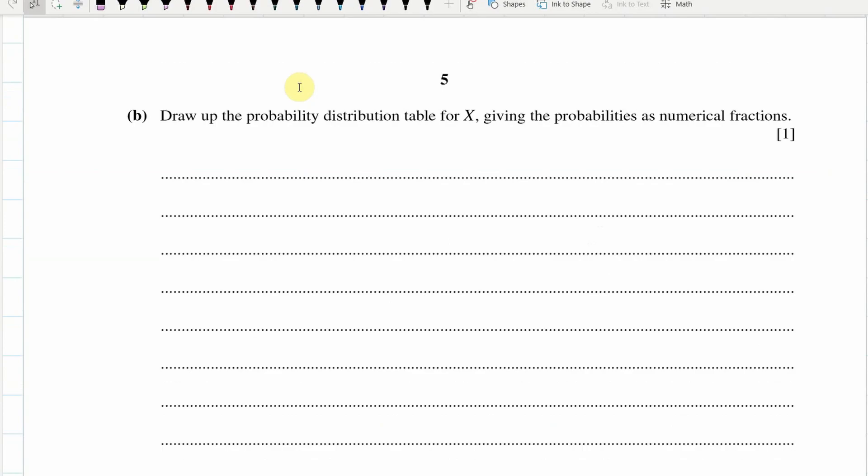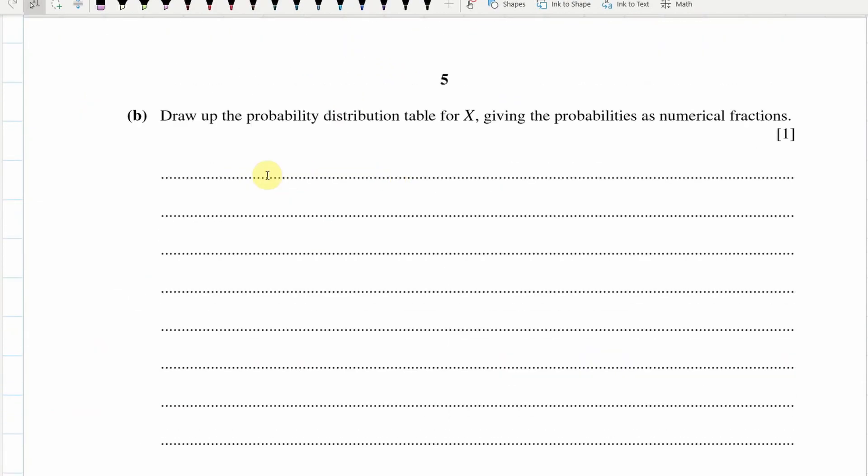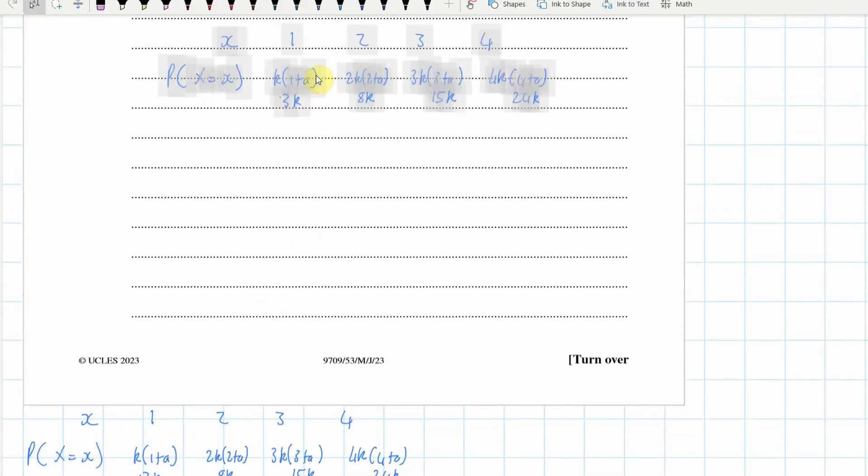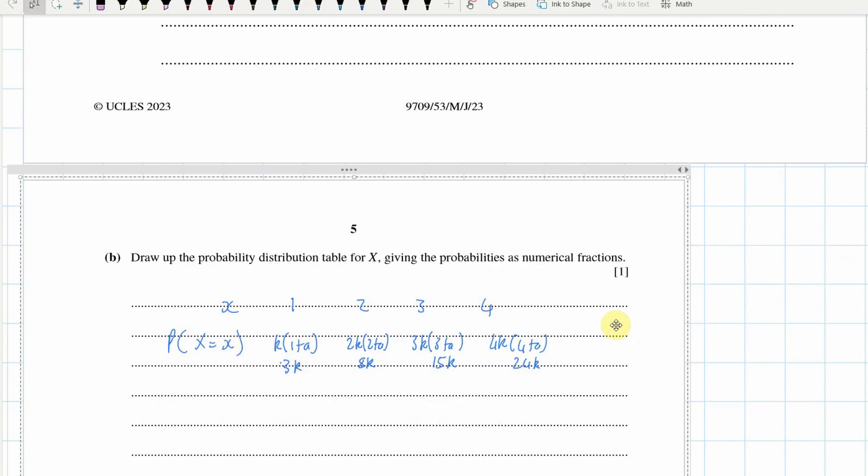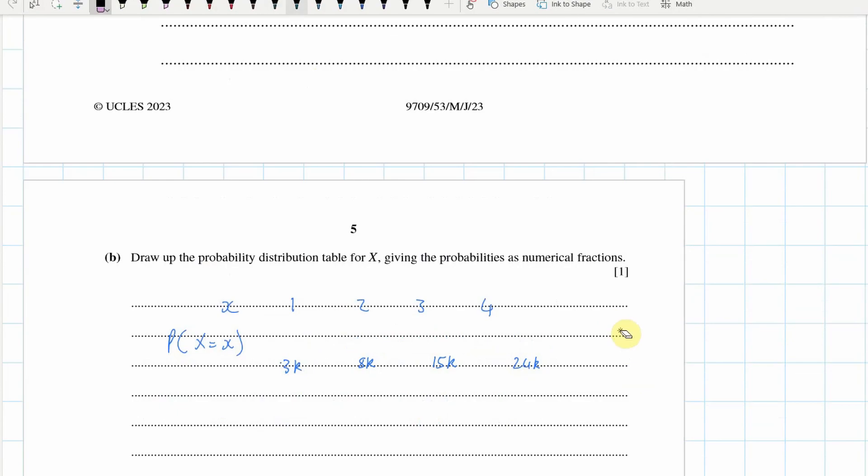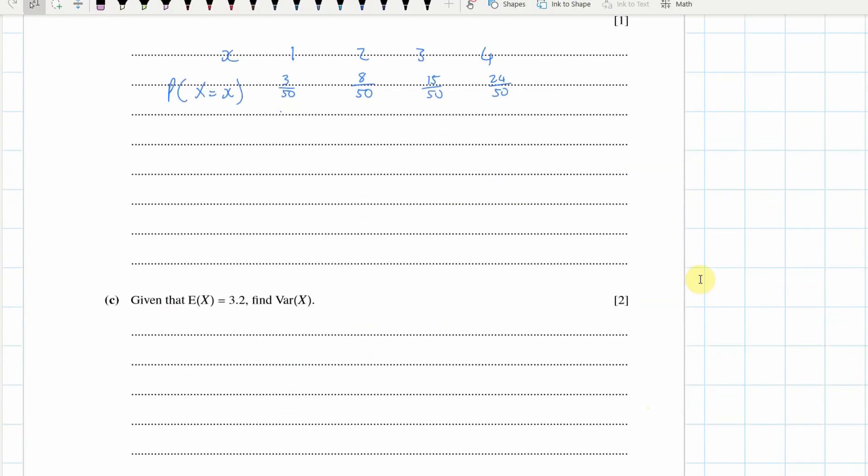Now, we've got to draw up a probability distribution, so I'm just going to grab what I've done here, copy it, and write it down here. It said to give the probabilities as fractions. Now we know what k is, it's 1/50th. So 3/50, 8/50, 15/50, and 24/50. And so we can delete all of this stuff here.